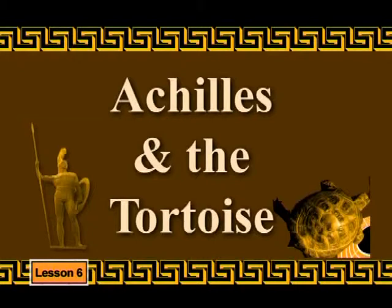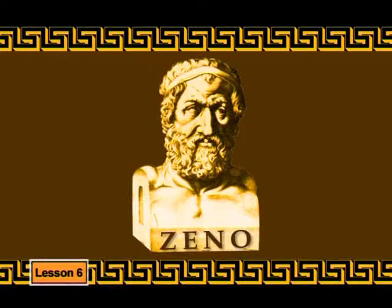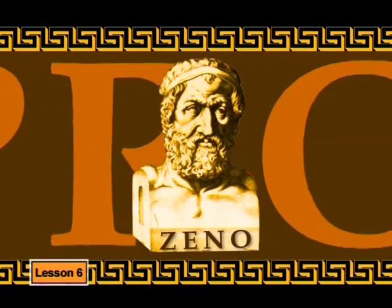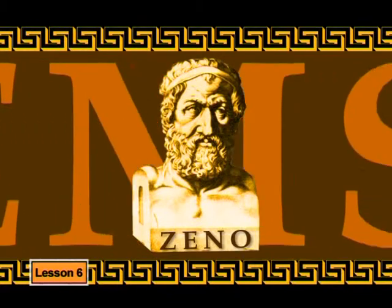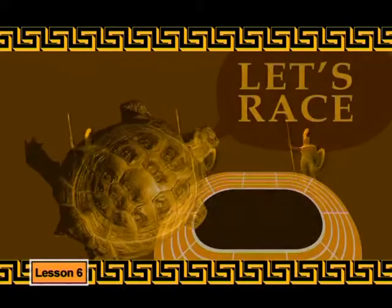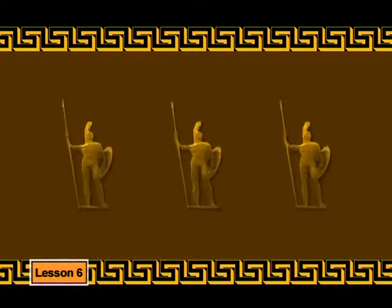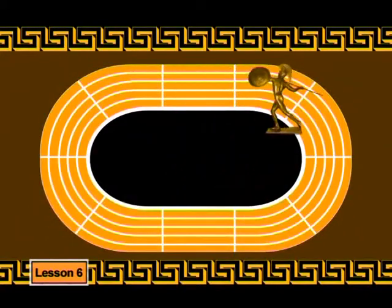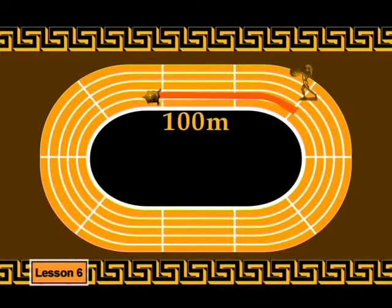I'm going to do this by telling you a story. Zeno was a Greek philosopher who lived more than two and a half thousand years ago, famous for posing a number of problems. The most famous was that of Achilles and the tortoise. Achilles, a very fast and well-respected athlete, was challenged to a race by a tortoise. He accepted but suggested that the tortoise be given a head start of 100 meters.